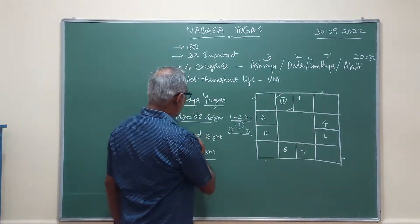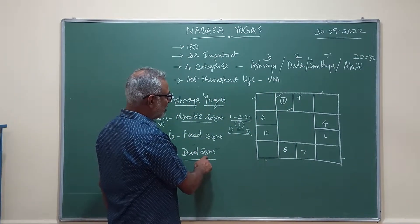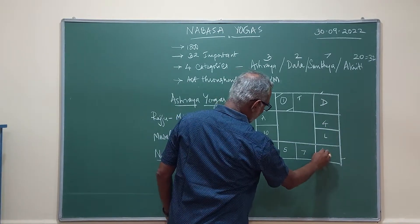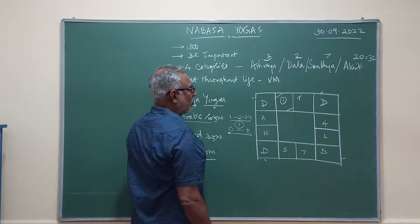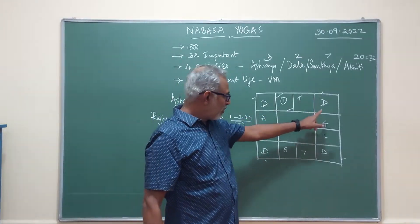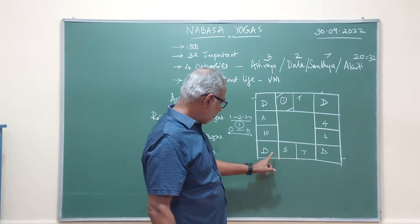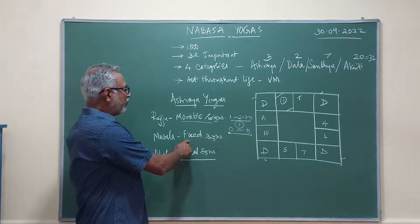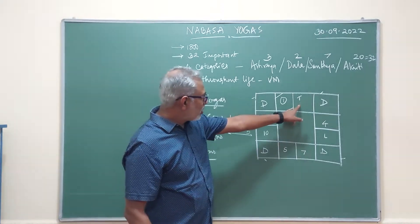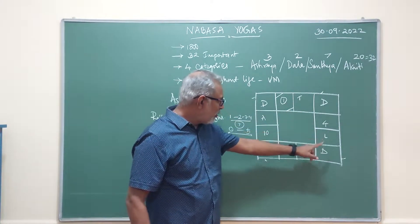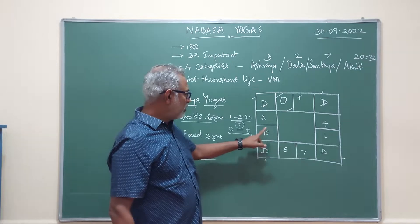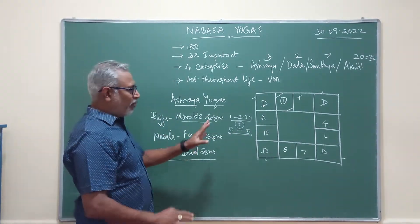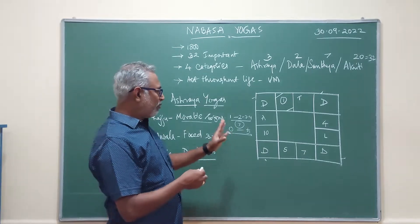The Dvishabha Rashi, that is dual signs, are Gemini, Virgo, Sagittarius, and Pisces. And fixed signs — that is Sthira Rashi — are Taurus, Leo, Scorpio, and Aquarius. I have used different notation to differentiate between them so you don't get confused when I write the same numbers repeatedly.